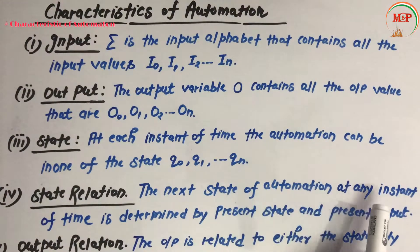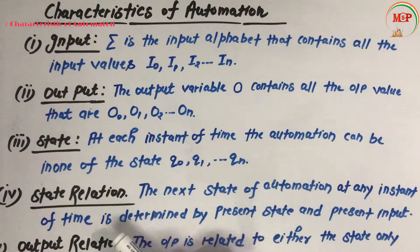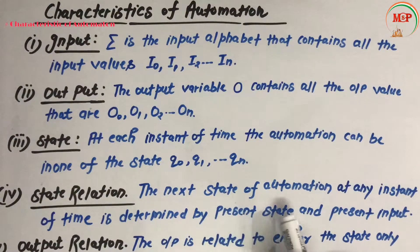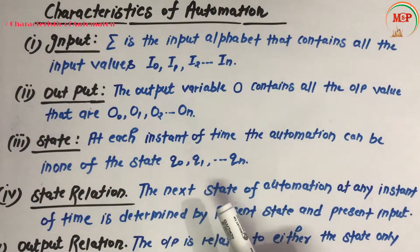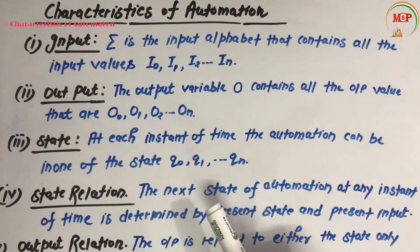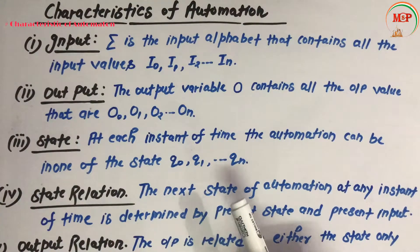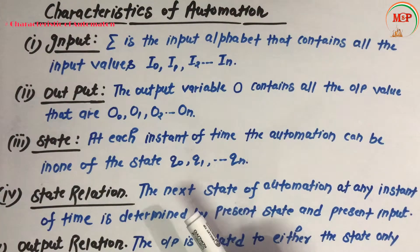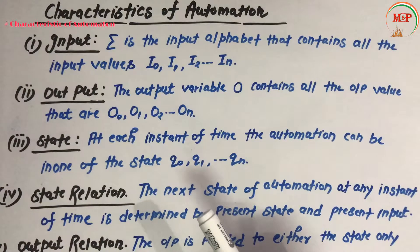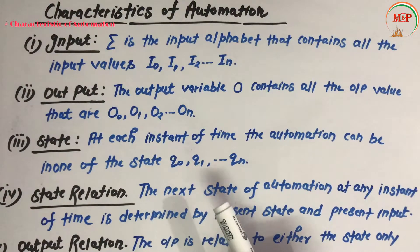Any automation machine ka jo next state hai, wo present state aur present input — kaunsa value apply kiya hai — us par depend karta hai.